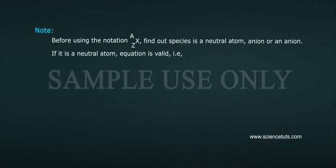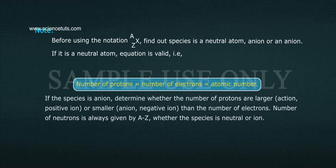Note: Before using the notation X-Z-A, find out if species is a neutral atom, cation or an anion. If it is a neutral atom, equation is valid. That is, number of protons is equal to number of electrons is equal to atomic number.